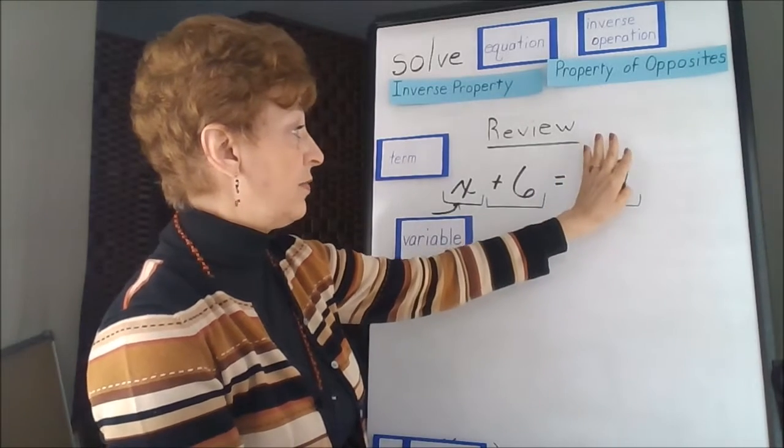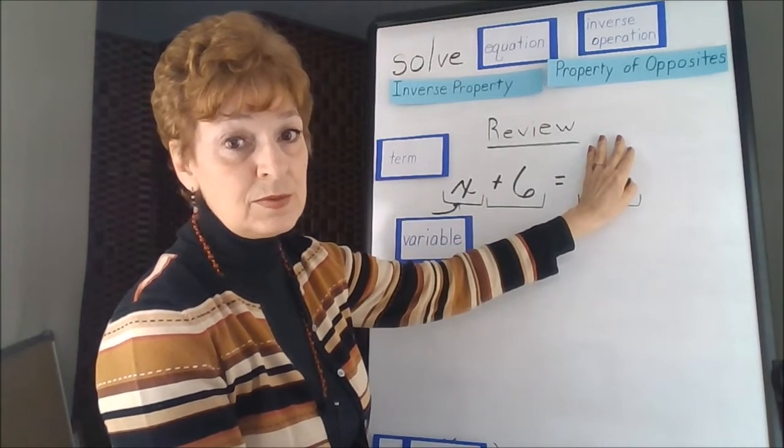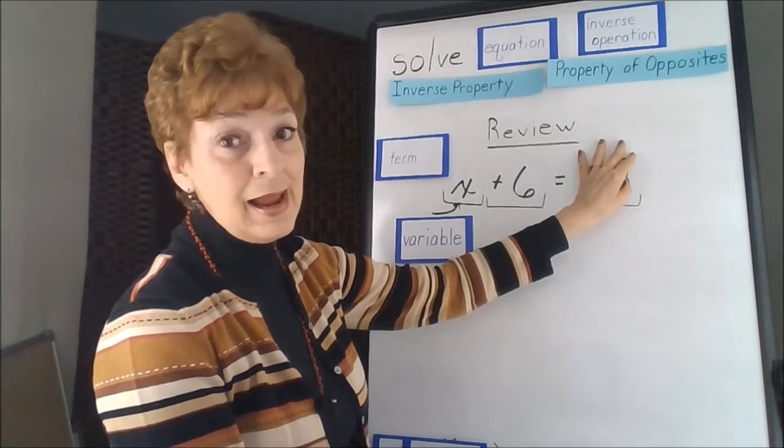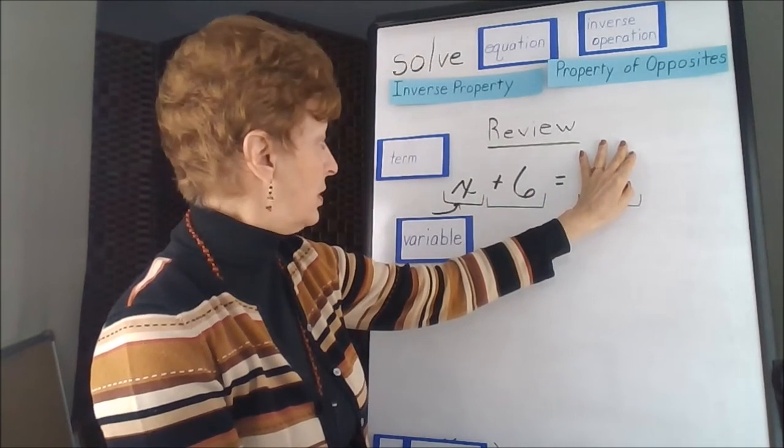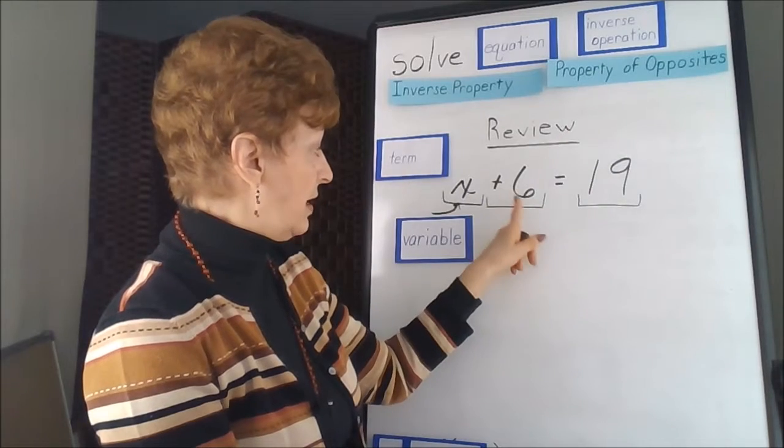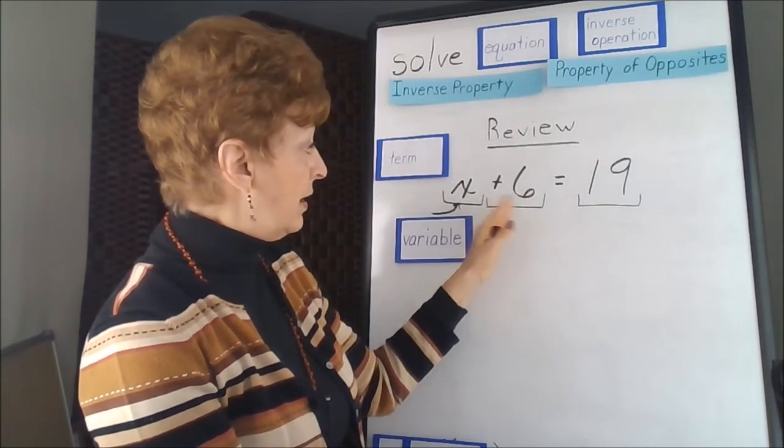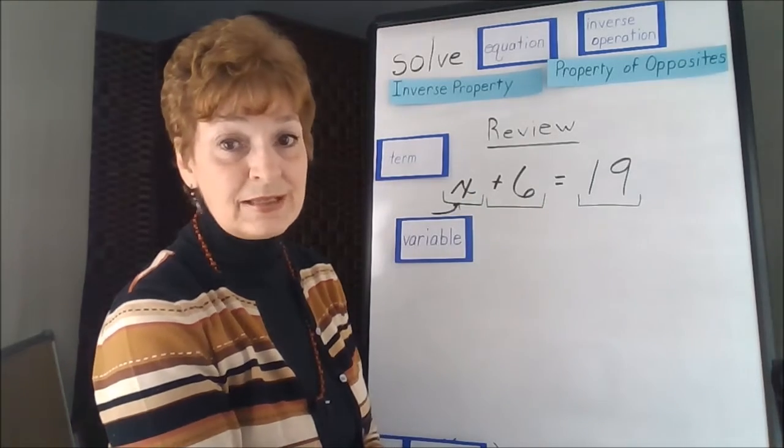And if this was not equal to anything, if this was just an expression, the x could be a variety of numbers. If it were 7 added to 6, we would have 13. If this was 1, this combination would only be 7.